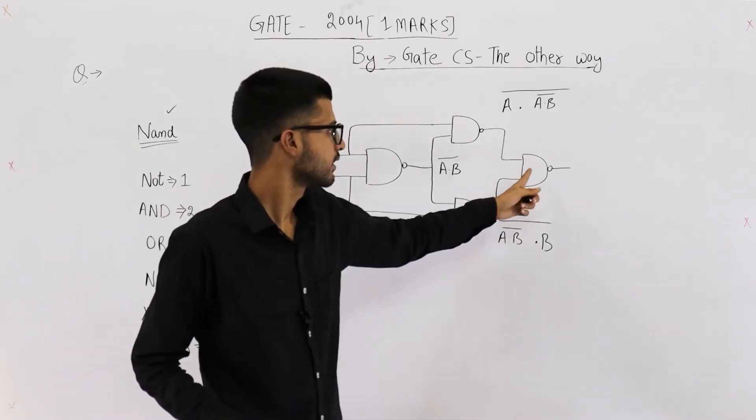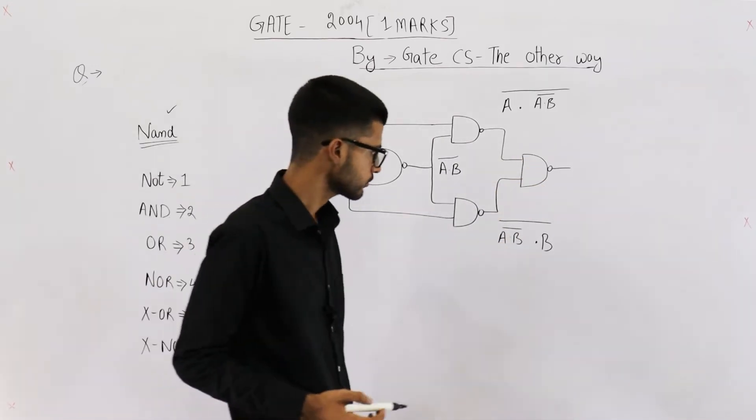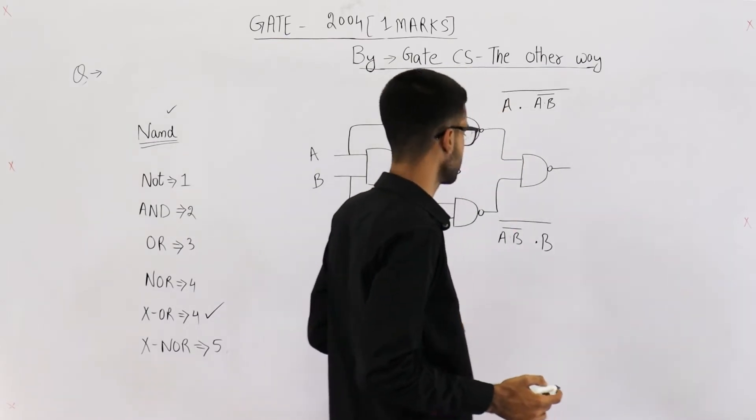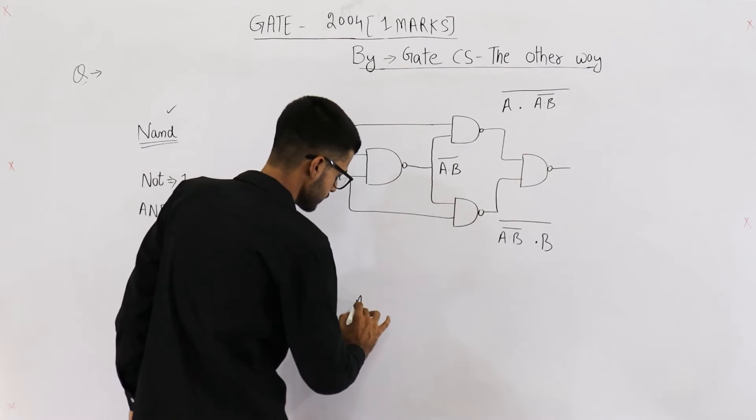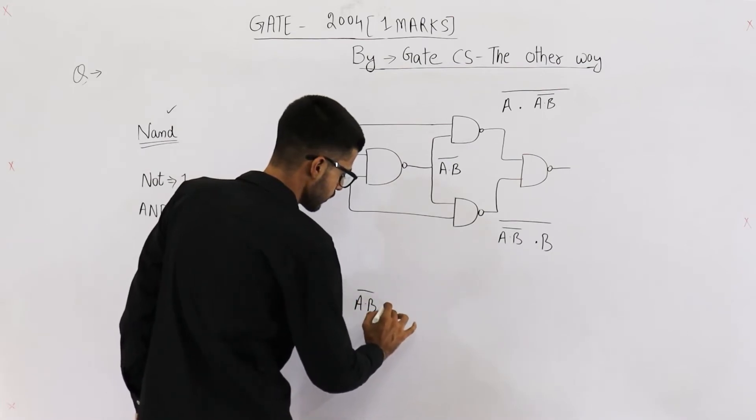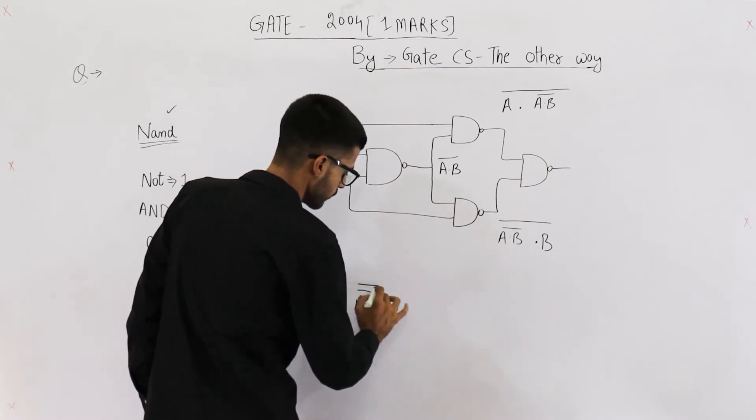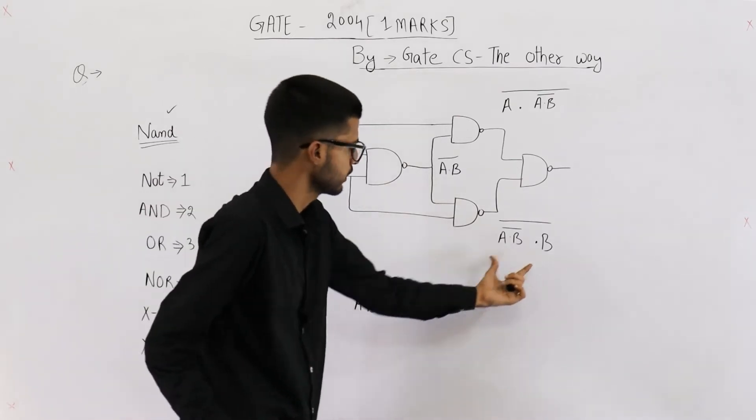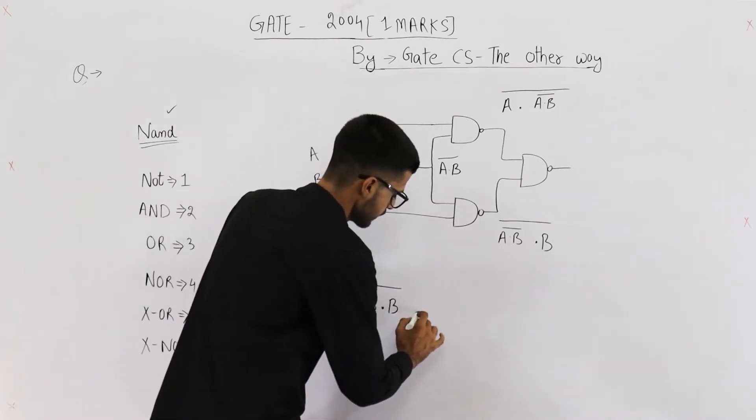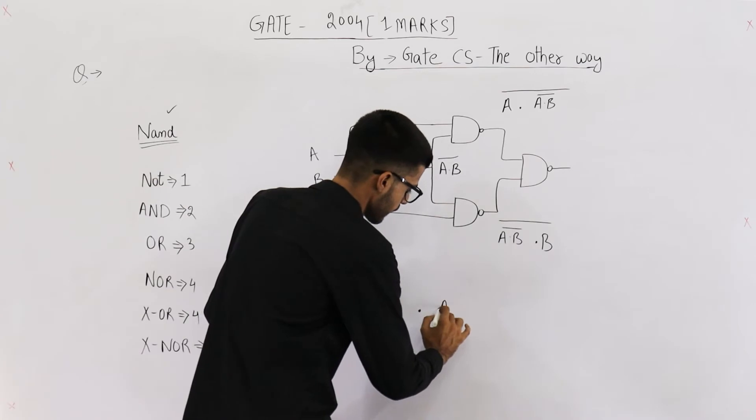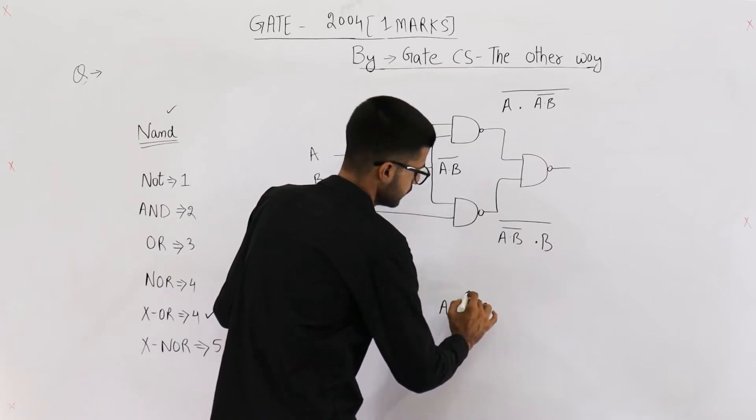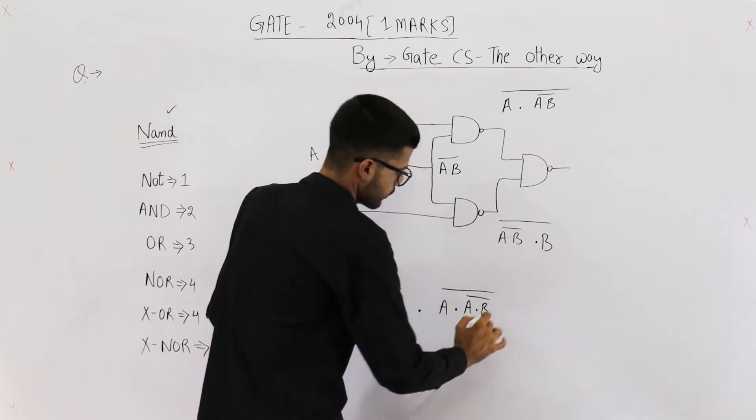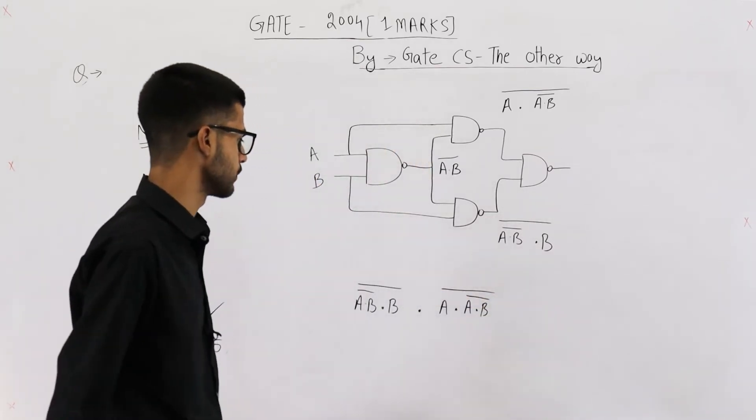Now let's analyze the output of this NAND gate. Both of its inputs are written here, so let me first copy down both of the inputs. It is A dot B whole complement dot B complement. This one is written here, and the next input is A dot A dot B whole complement, and whole complement.